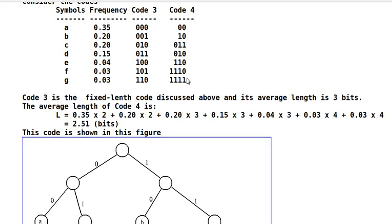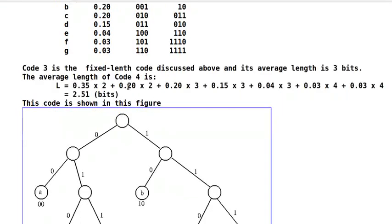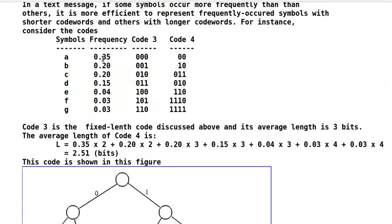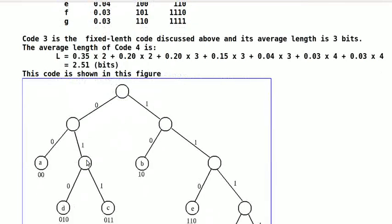As discussed above, code 3 is the fixed length code. Its average length is 3 bits. The average length of code 4 is L equals 0.35 times 2 plus 0.20 times 2 plus 0.20 times 3 plus 0.15 times 3 plus 0.04 times 3 plus 0.03 times 4 plus 0.03 times 4, equal to 2.51 bits. This code is shown in this figure.